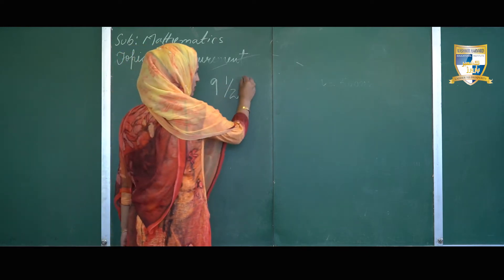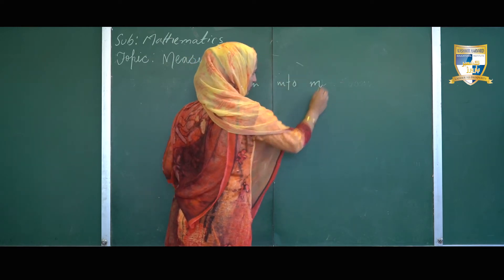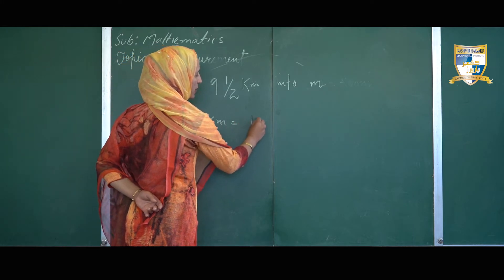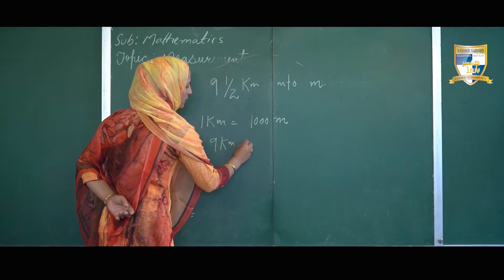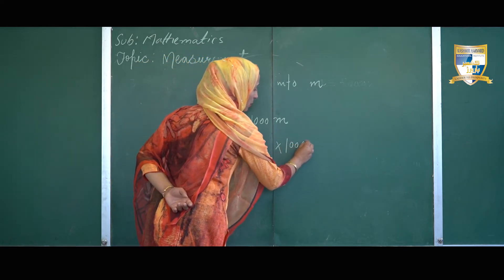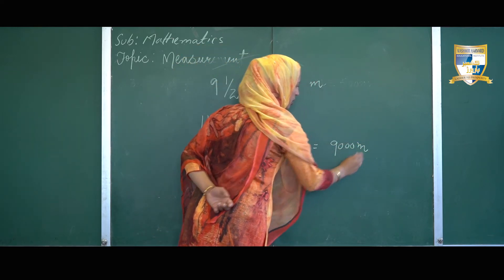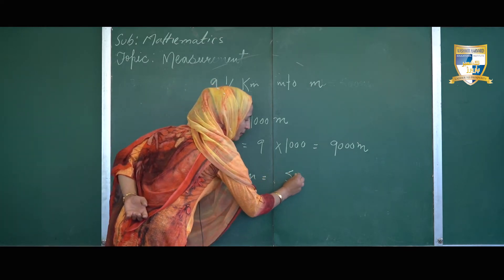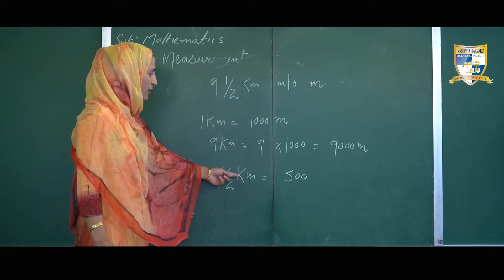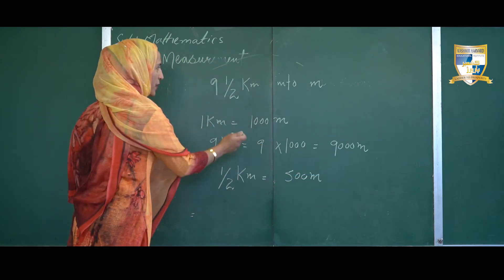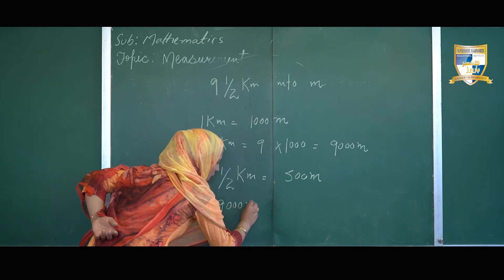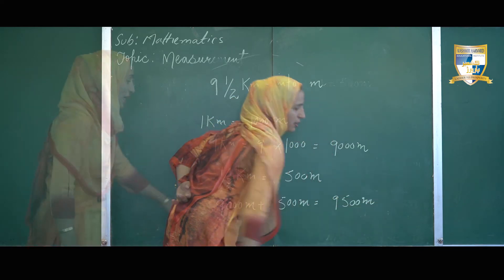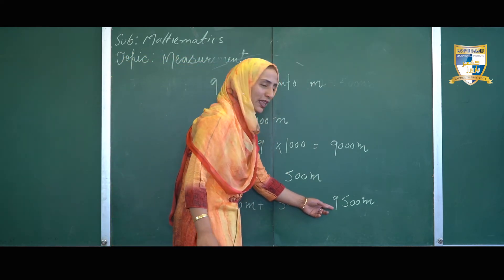Let us take another example: convert 9 and a half kilometers into meters. As we know, 1 kilometer equals 1000 meters, so 9 kilometers equals 9 multiplied by 1000, which is 9000 meters. Now we have half a kilometer, and half a kilometer equals 500 meters, since 1 kilometer consists of 1000 meters. So the total is 9000 meters plus 500 meters, which equals 9500 meters.